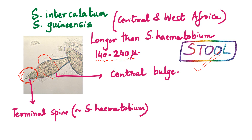Let's quickly review the eggs of schistosomes. Eggs in urine with terminal spine: Schistosoma haematobium. Eggs in stool with terminal spine: intercalatum and guineensis. Stool eggs that are rounded with small lateral spines: japonicum or mekongi. This finishes our eggs of all the flukes.